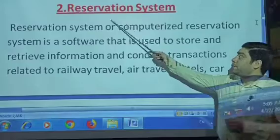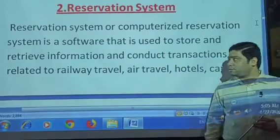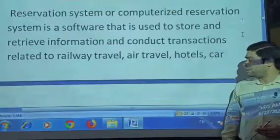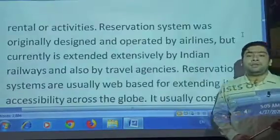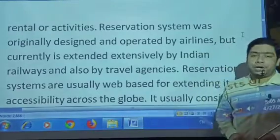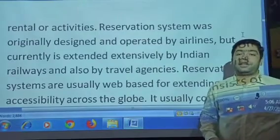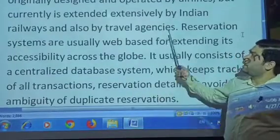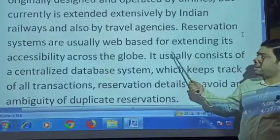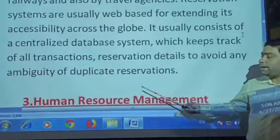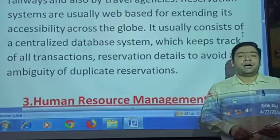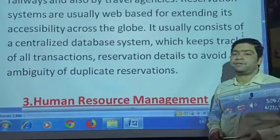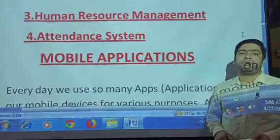After accounting software, we move to the reservation system. A computerized reservation system is software used to store and retrieve information and conduct transactions related to railway, air travel, hotel, and rental activities. For example, when you want to board a train, you use IRCTC to reserve your ticket. Other reservation websites include iGo, BIBO, and hotel booking sites like Trivago.